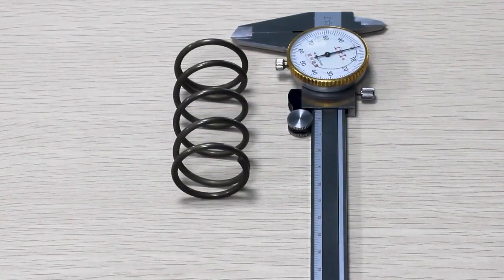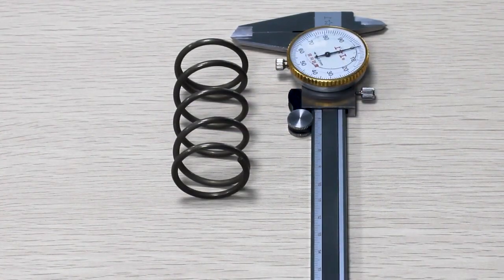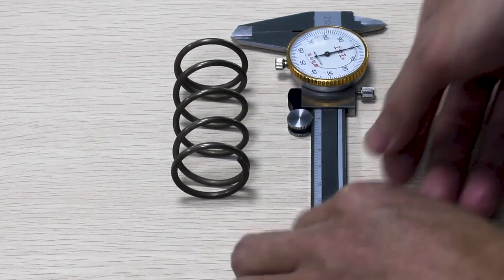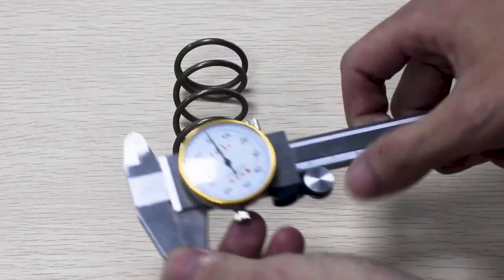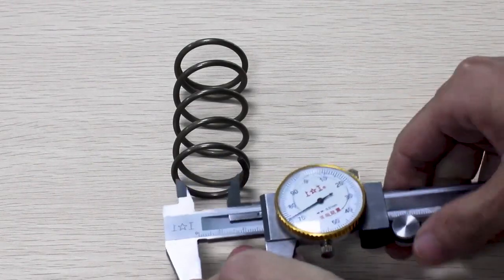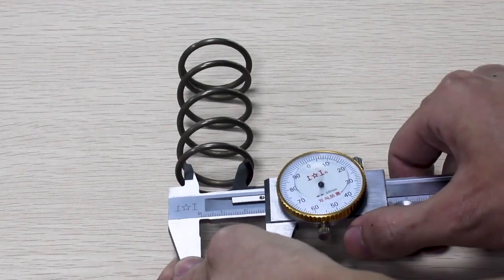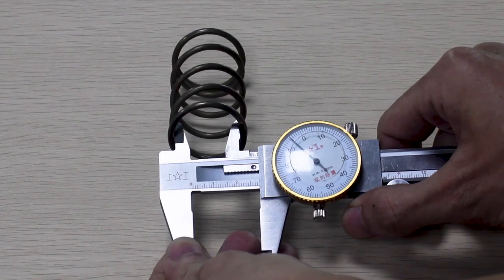The inside diameter or ID is hard to measure accurately, so use the outside diameter whenever possible. For this spring, the inside diameter is 29.95 millimeters.